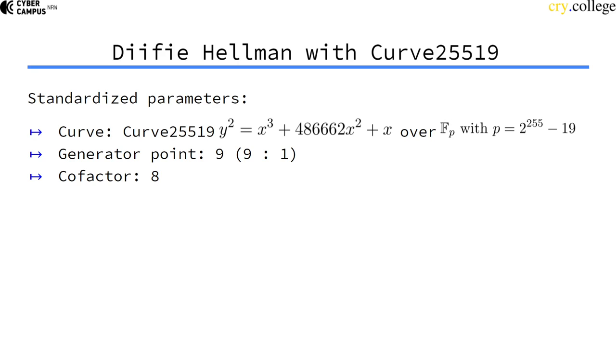In essence we do normal Diffie-Hellman just with this specific curve. We need a standard, standardizing the curve. That is Curve25519 with the curve equation and the prime number. Then we need a generator point which is 9, or in projective coordinates (9:1).